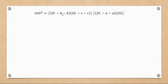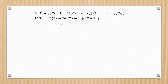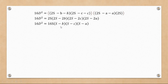Substituting in, we get (2s − b), (2s − c), and (2s − a) in the respective places, along with 2s for the (a + b + c) term. Factoring out a 2 from each of the three bracketed expressions, we get 2 × 2 × 2 = 8, and 8 × 2 = 16, so we have 16s on the left side. Dividing both sides by 16 isolates D².